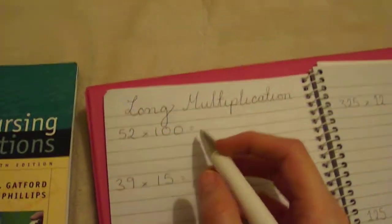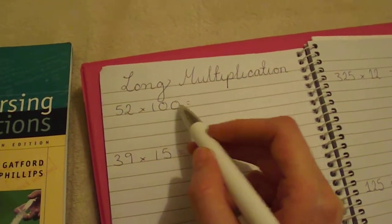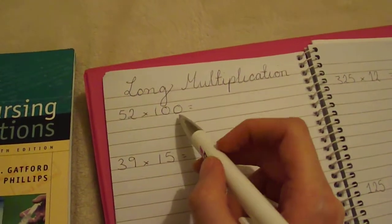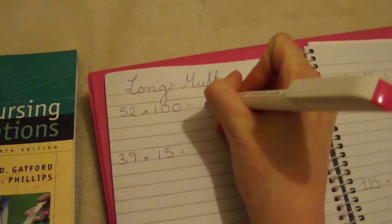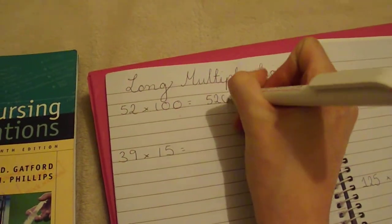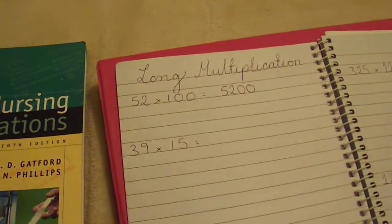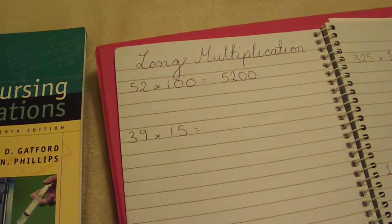So we're starting off really easy here with 52 times 100, because if you're times-ing by 10 or 100 or 1000, you'll just add in the zeros here. So you'll get your 52 and then you add your two zeros. So sorry if that's really easy for some of you guys, but I just wanted to start off with that basic idea.